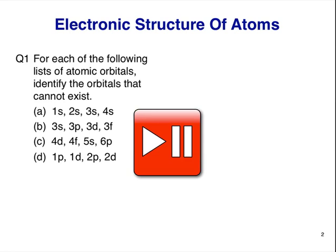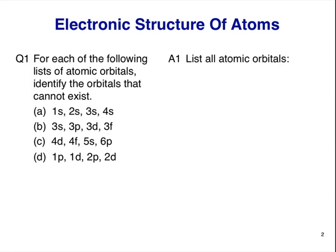Pause the video now and think about each statement. Since each of these parts is basically the same, I would write out a list of all the possible orbitals in any atom, and then see which ones don't belong to the list.